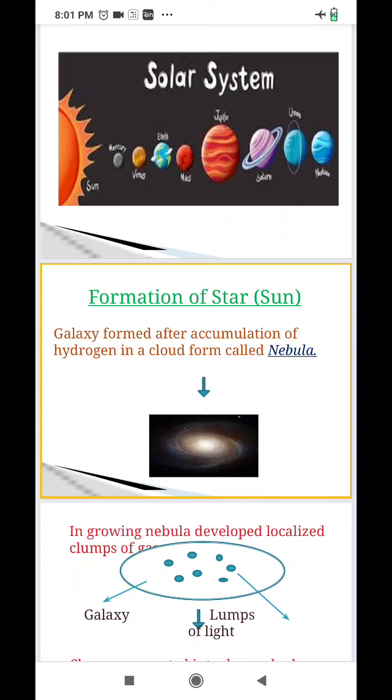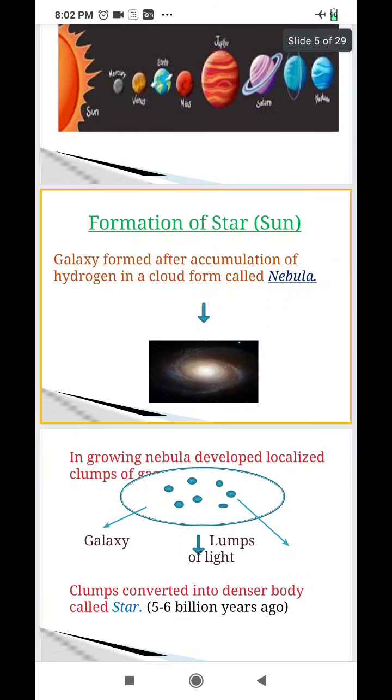And what this nebula, later on, you can see there are small lumps of gases that are found in various parts of the nebula. Now, these clumps converted into denser bodies, which today we see in the sky as star.